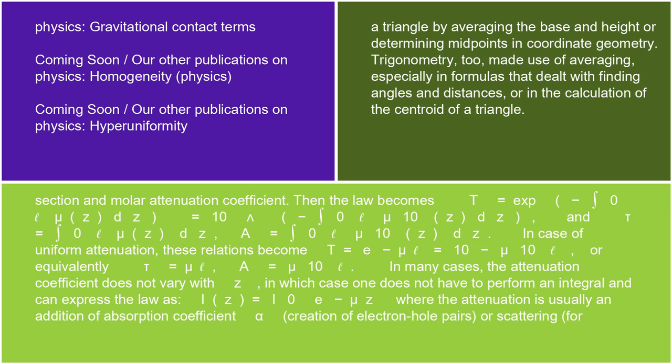Then the law becomes: T = exp(−∫₀ℓ μ(z)dz) = 10^(−∫₀ℓ μ₁₀(z)dz), and τ = ∫₀ℓ μ(z)dz = ∫₀ℓ μ₁₀(z)dz. In case of uniform attenuation, these relations become T = e^(−μℓ) = 10^(−μ₁₀ℓ), or equivalently τ = μℓ and A = μ₁₀ℓ.